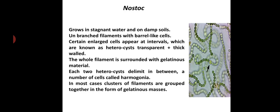Therefore, it appears to be a gelatinous ball if you take it out with your hands or with the help of a stick. If you take it out from water or damp soil, it appears like a gelatinous ball. The filament consists of vegetative cells and heterocysts. These heterocysts are elongated, thick-walled cells. Each two heterocysts delimit in between a number of cells called hormogonia.